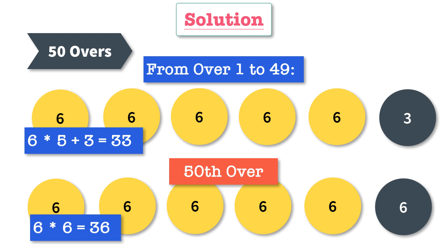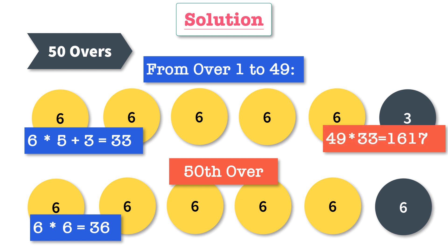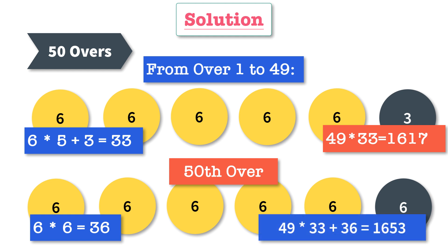Therefore, the maximum number of runs a batsman can score in an ideal case is: every over up to the 49th, the first five balls score six and the last ball scores three runs. The total runs till the 49th over is 33 times 49, and in the 50th over he hits six on all balls giving 36. So the total is 33 times 49 plus 36, which yields 1653.